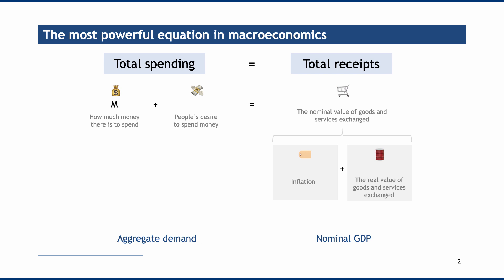It's more conventional to use an equation to represent this model. M refers to changes in the money supply. V, or velocity, refers to people's desire to spend money. On the right-hand side, P refers to changes in inflation and Y refers to real GDP growth — changes in the real value of goods and services being exchanged. So we can write: M + V = P + Y, where all variables are growth rates.